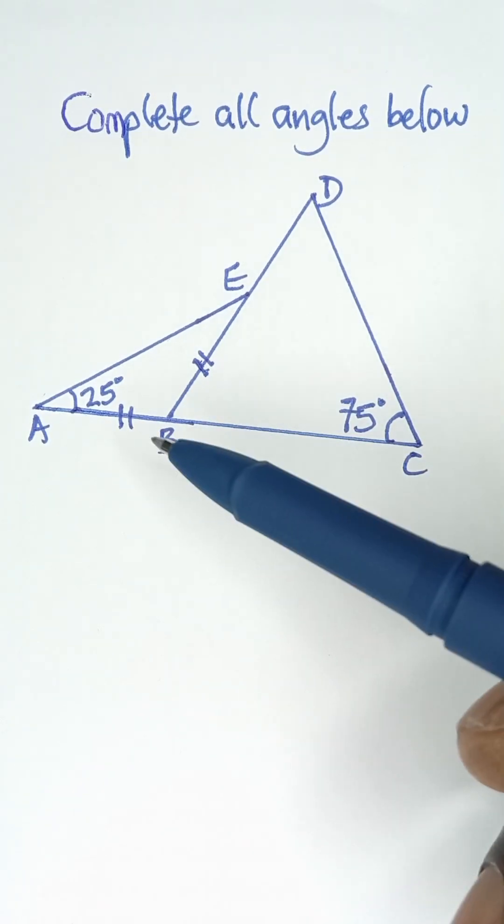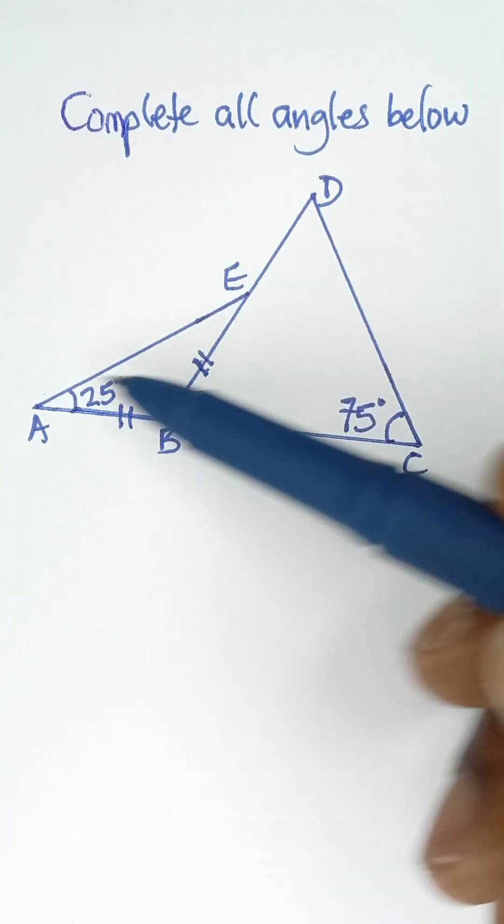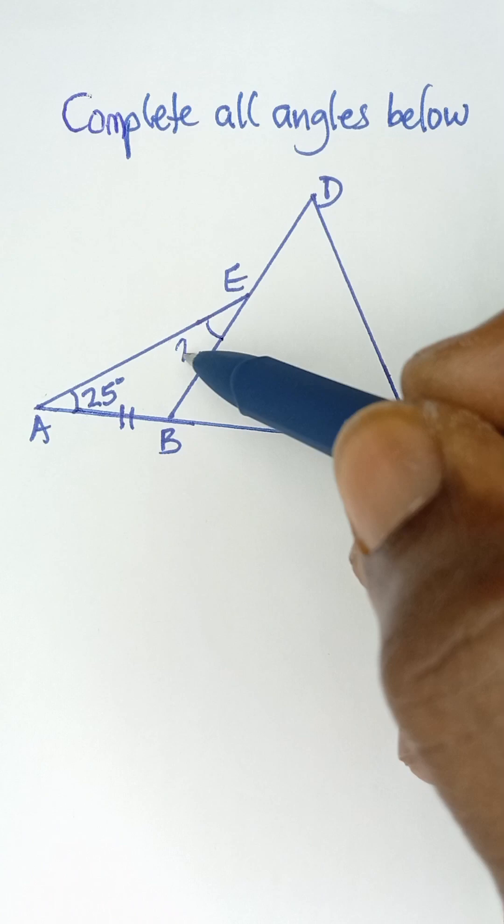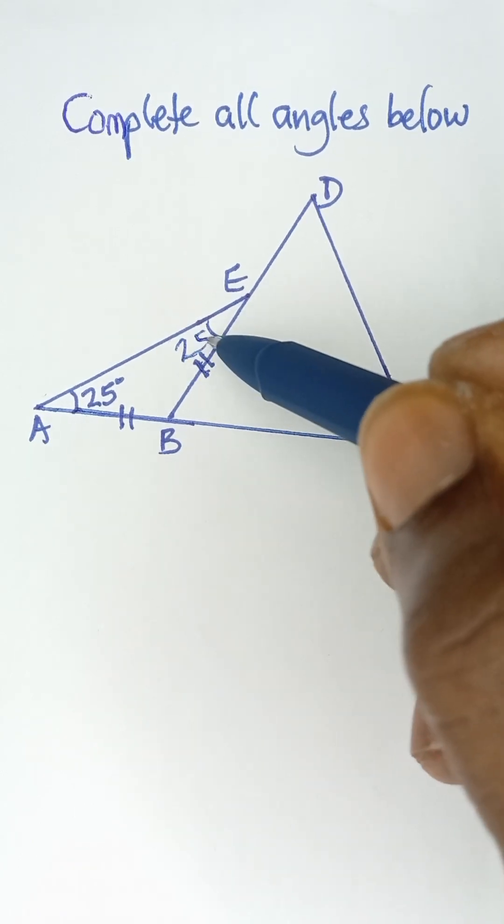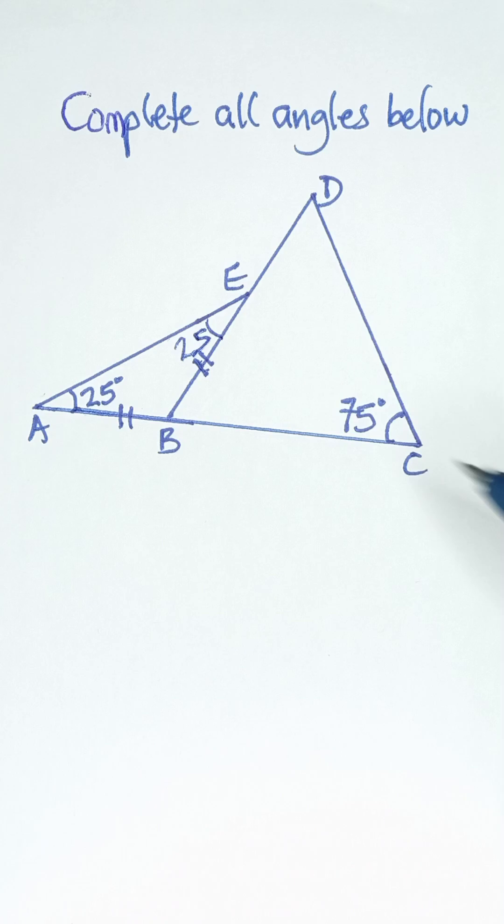In an isosceles triangle, the base angles are equal. So if this is 25, it also means that this angle is 25. The base angles of an isosceles triangle are equal.